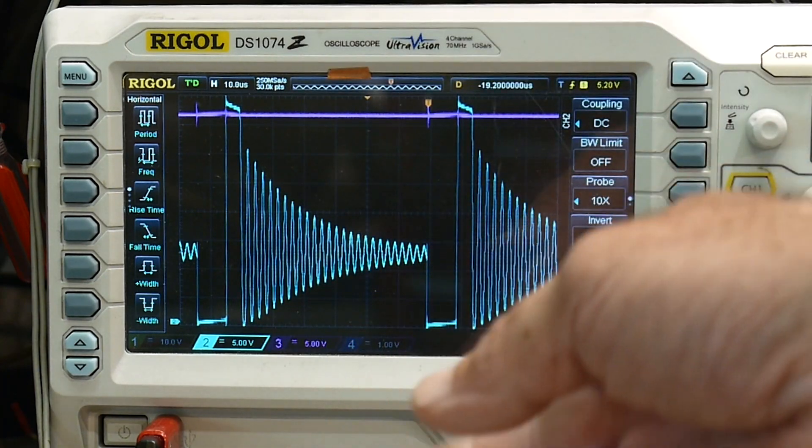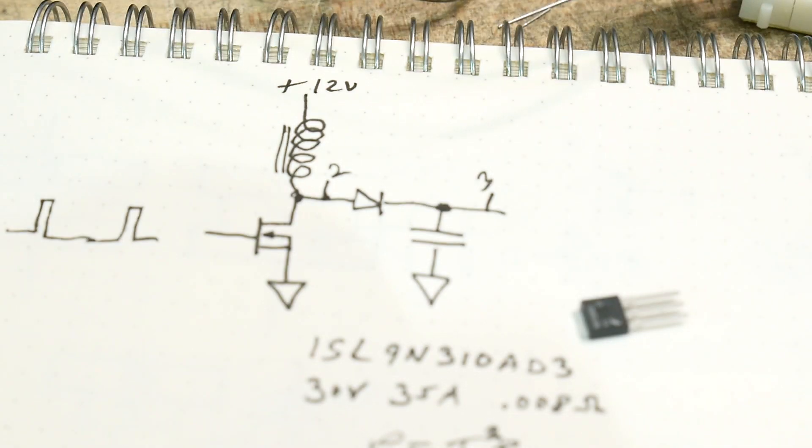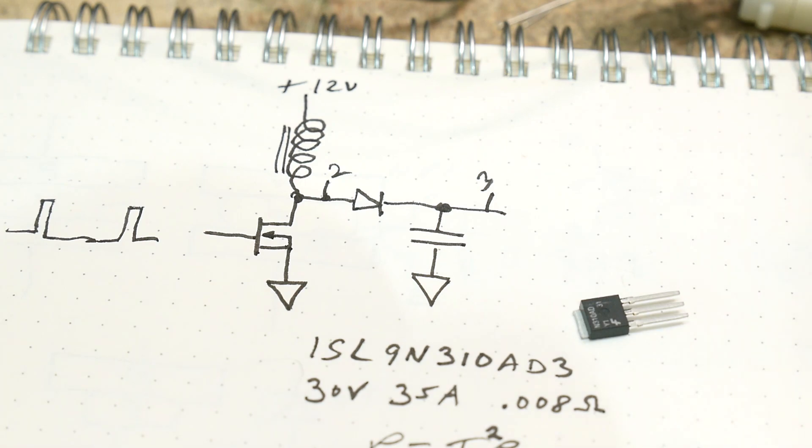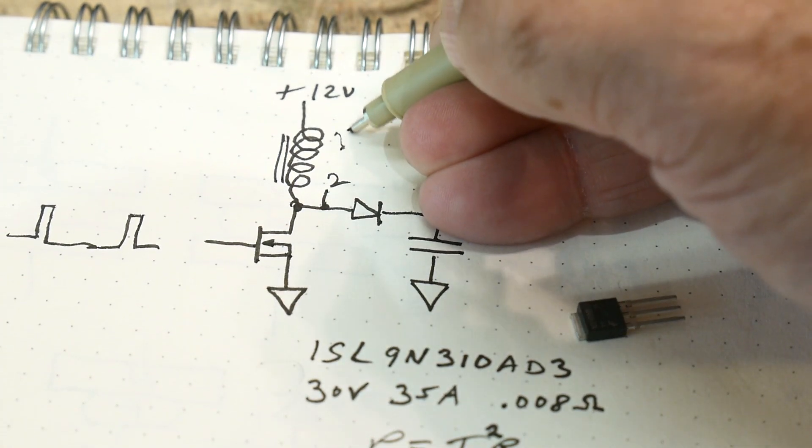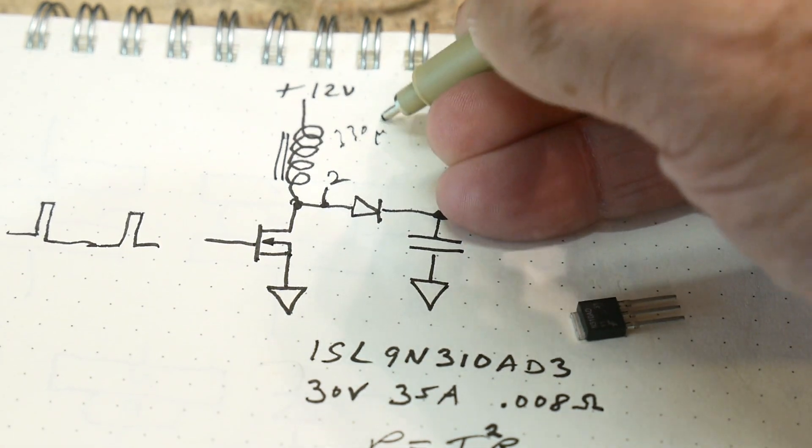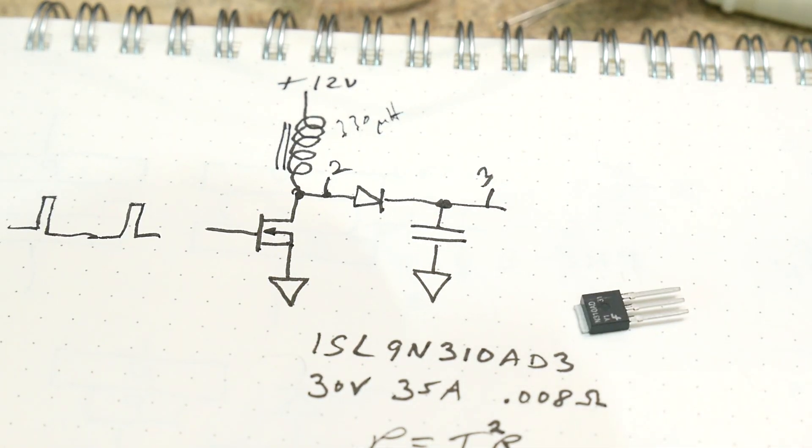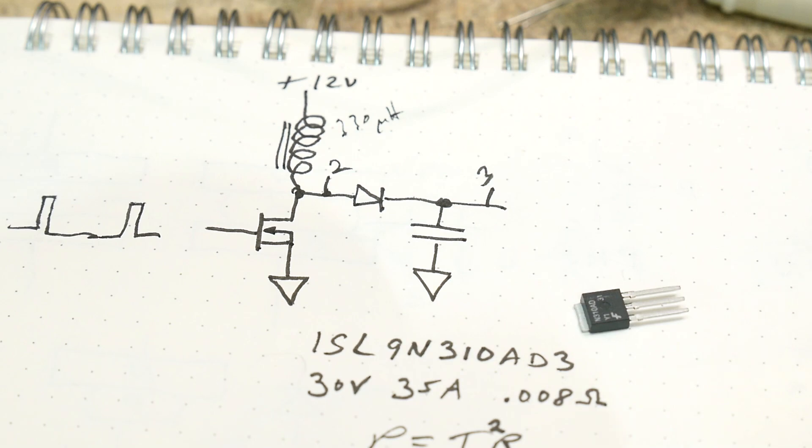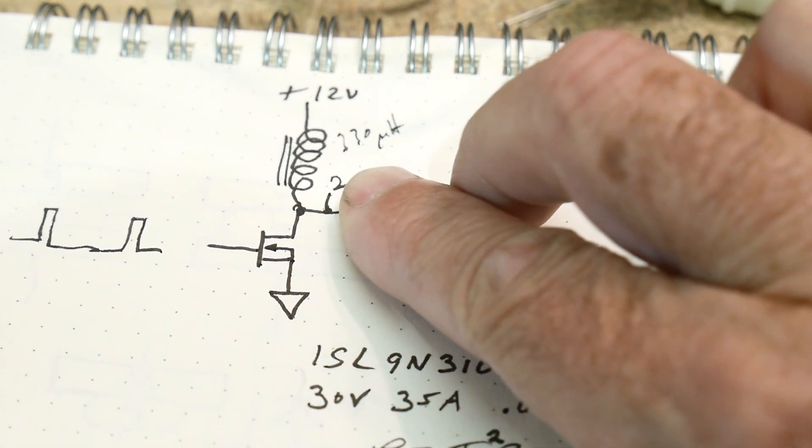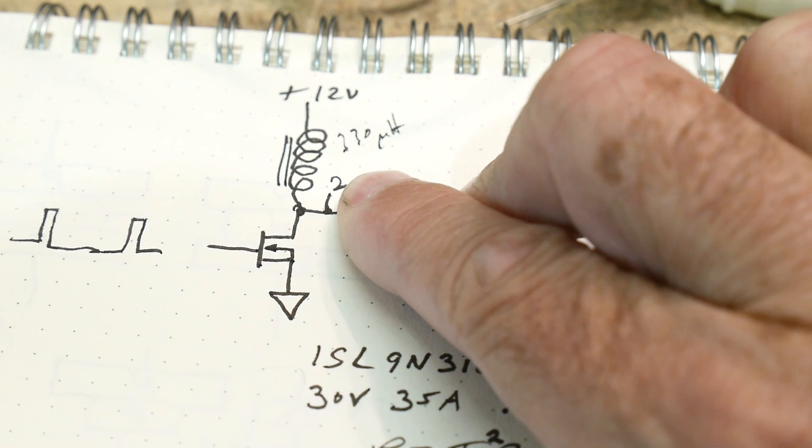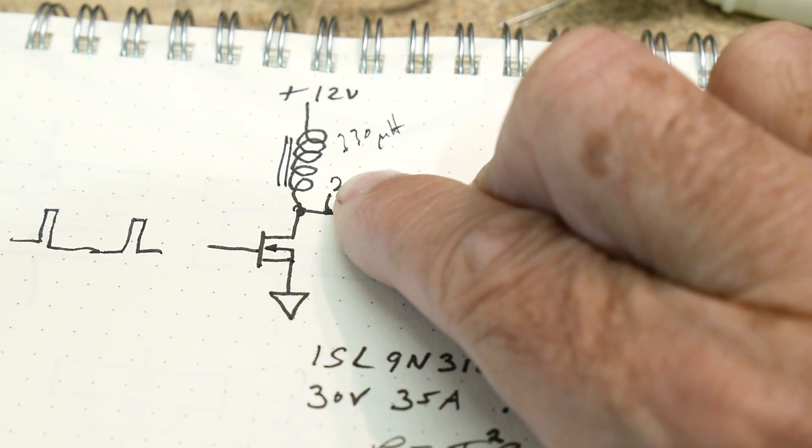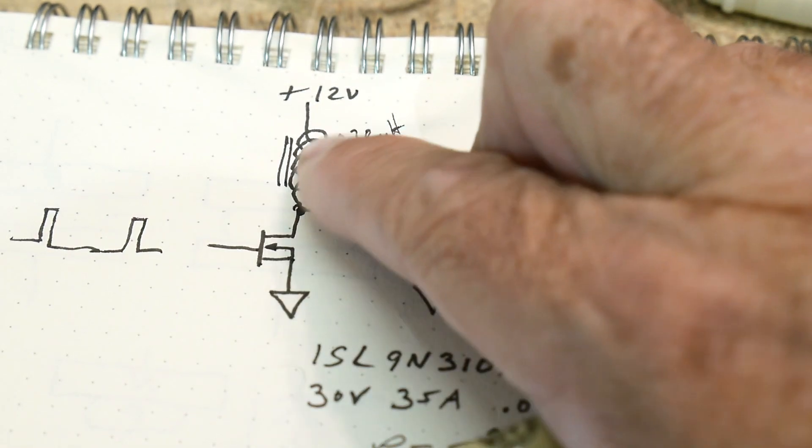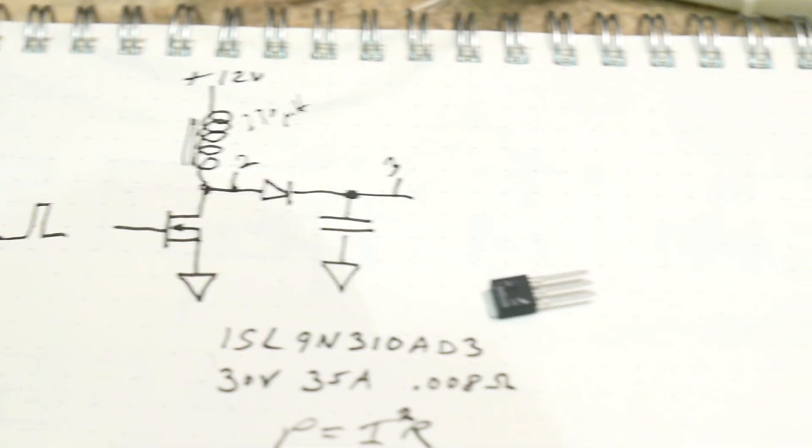So we certainly have an inductor, right? We have this big inductor, it's 330 microhenrys. All right, so where's the capacitor? Well, if you just take all of this out there, it still rings. Where's that capacitor? It's the self-capacitance of the inductor.